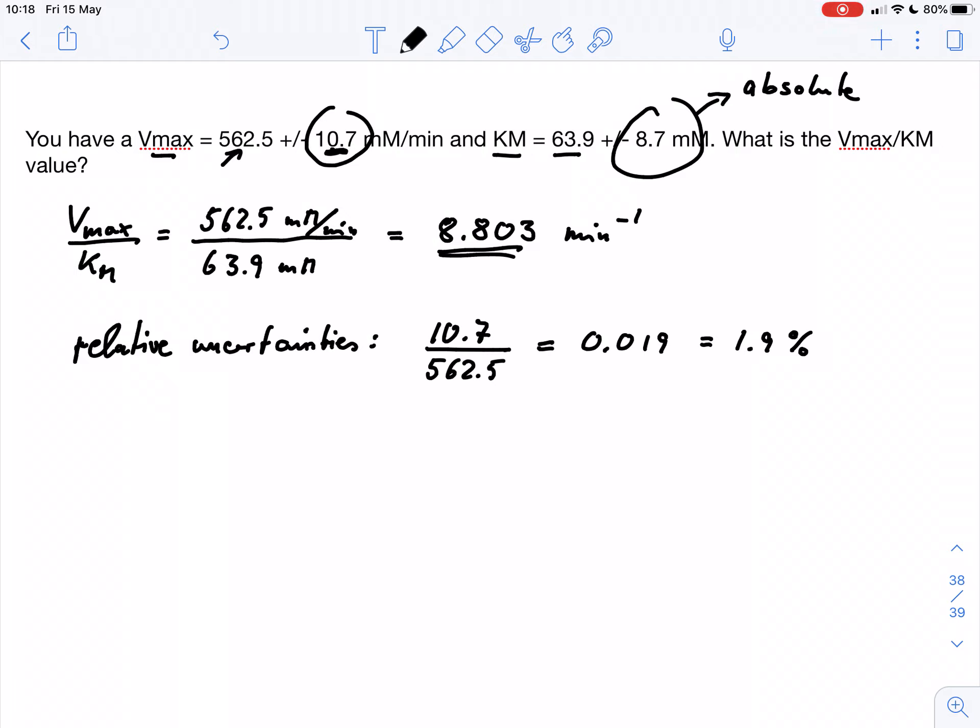For the second measurement, for Km, we get 8.7 divided by 63.9. And that gives us in a calculator 0.136. Or we can also convert it to a percentage that would be 13.6% uncertainty.